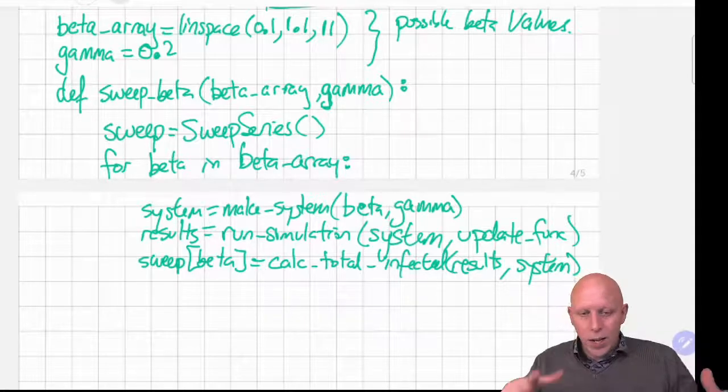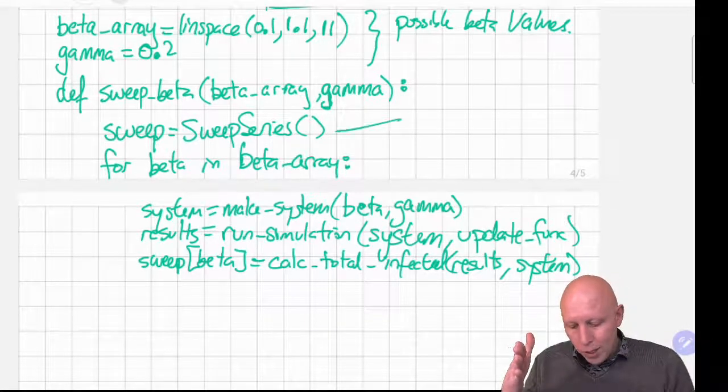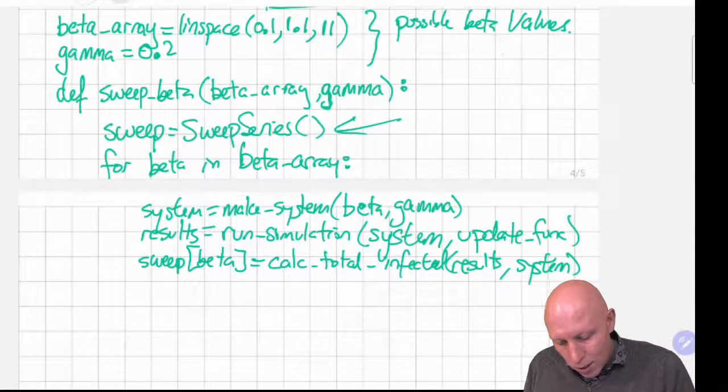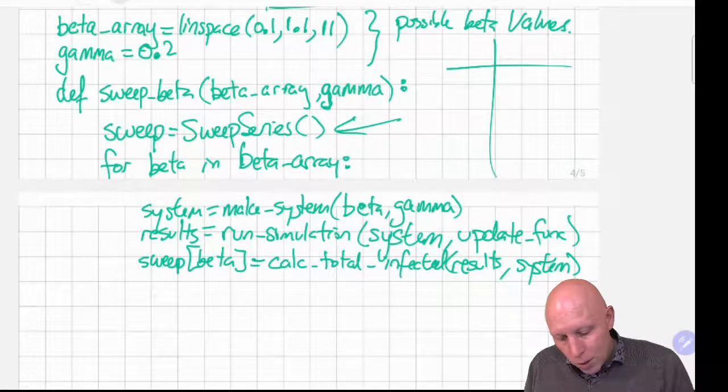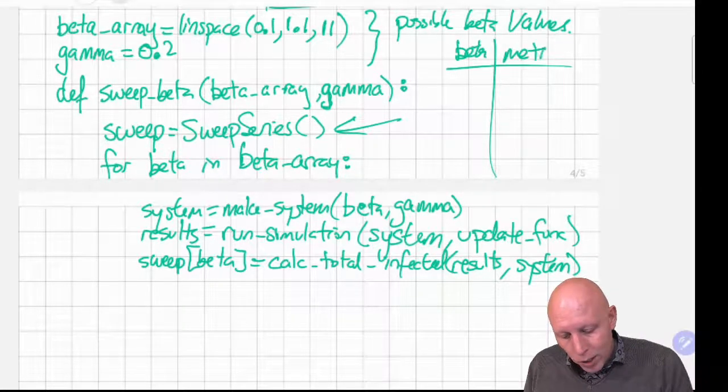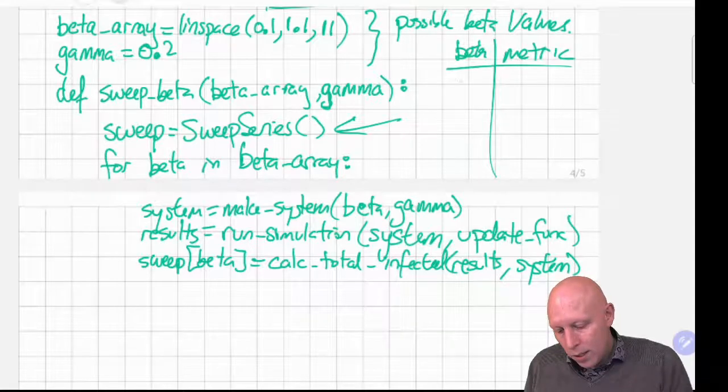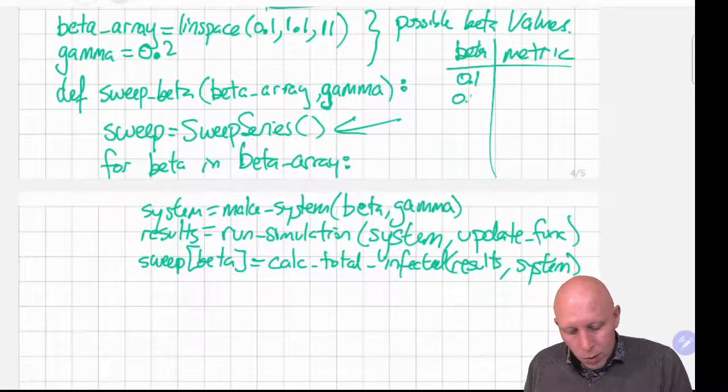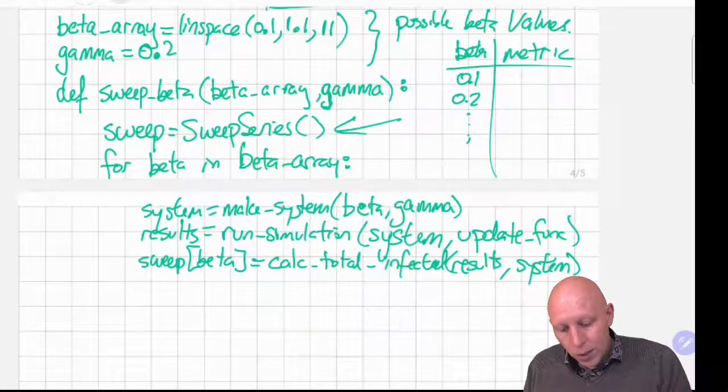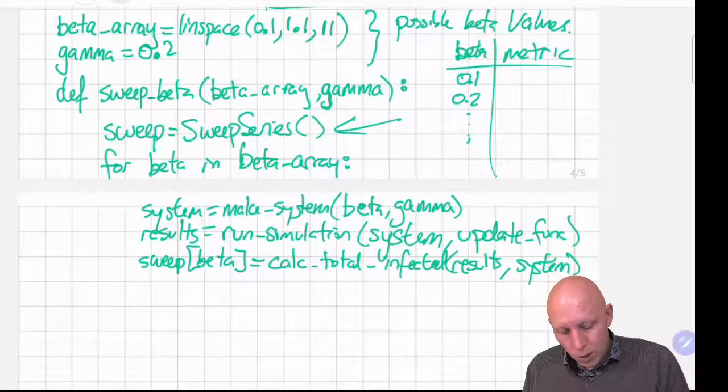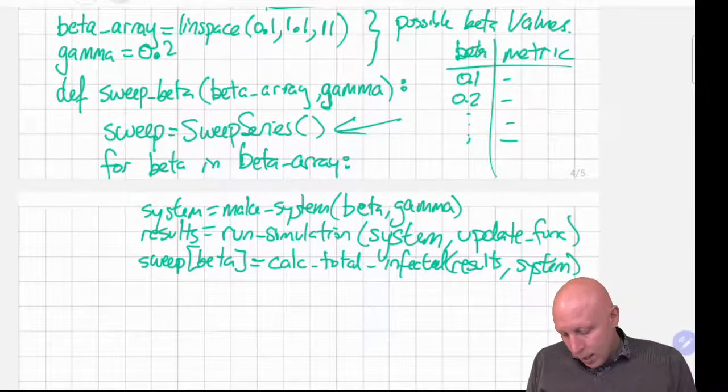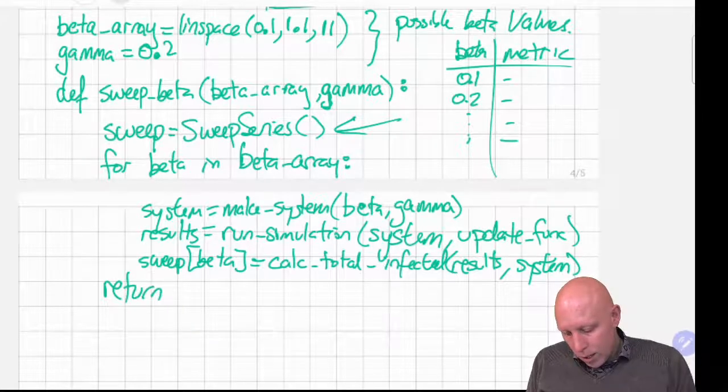And then we take our metric and we put it into our sweep series. Sweep of beta is equal to calculate total infected of results and system. And so now we've created an empty sweep series and we've put in the values depending on what the different betas are. In this example we have beta value and we have our metric in our sweep series. Beta is equal to 0.1, beta is equal to 0.2 and so on. And then the metric goes with different values depending on what the simulation gives us. And we can return sweep.